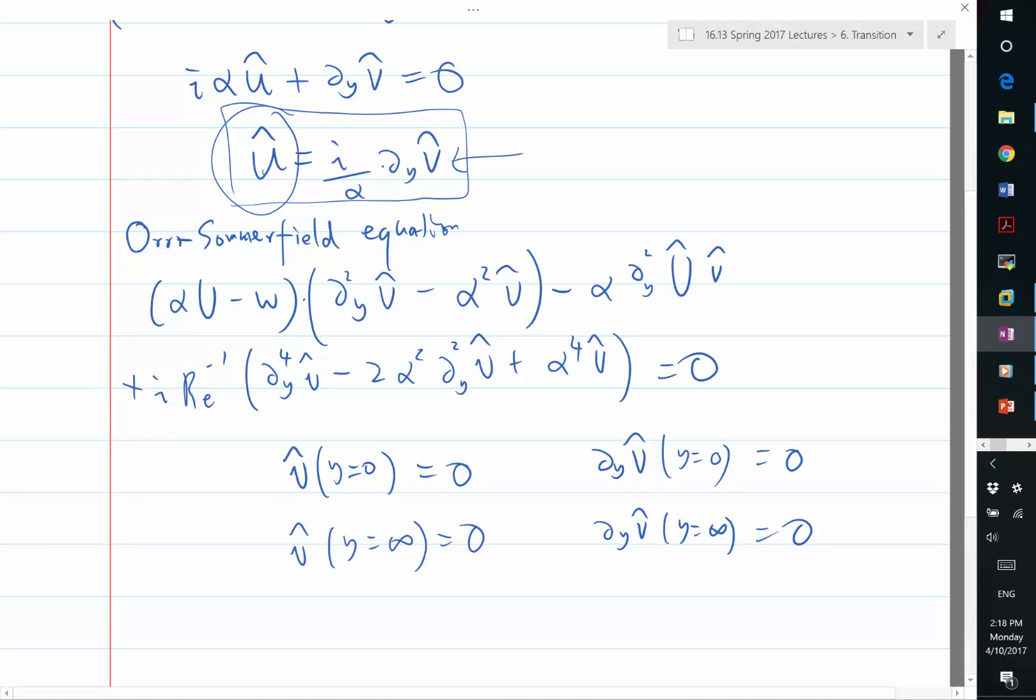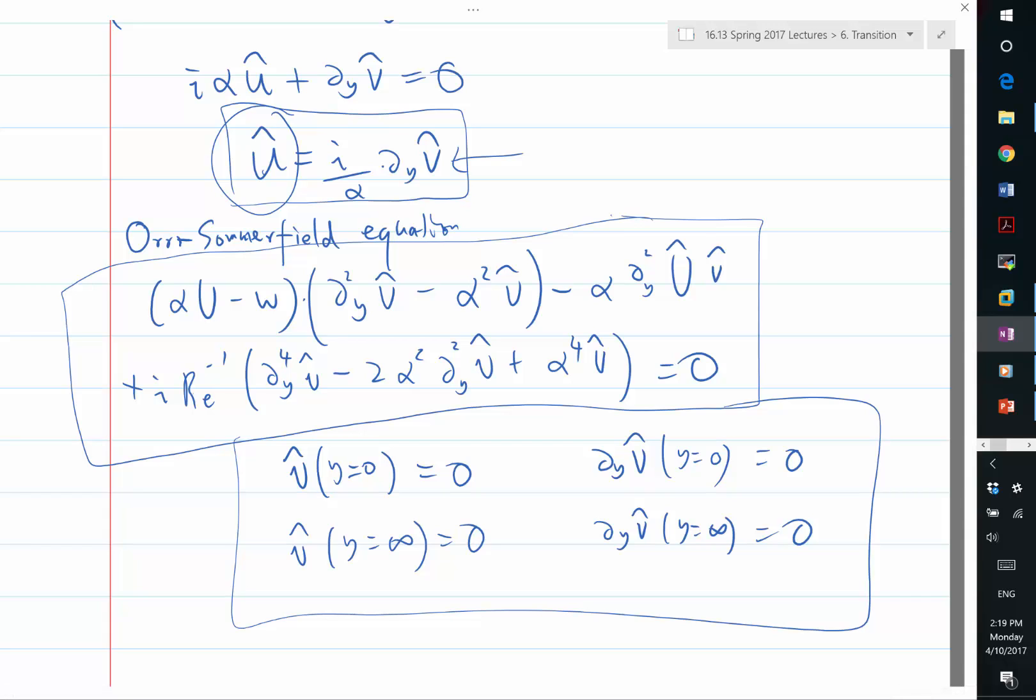What's interesting is that we have a homogeneous equation with homogeneous boundary conditions. If you have v hat equal to zero, it satisfies the equation. That's not surprising because if you have no disturbance, the field satisfies the Navier-Stokes equation. But what's interesting is not this trivial solution, but the eigensolutions of this equation.